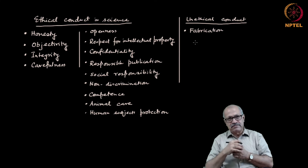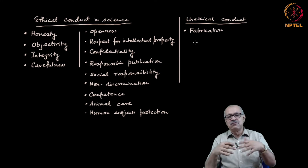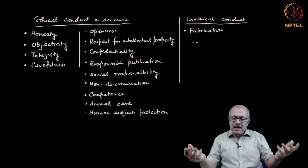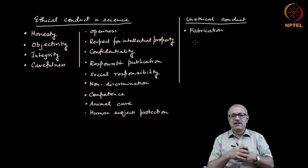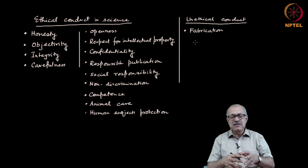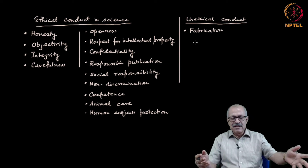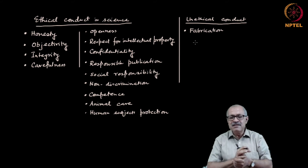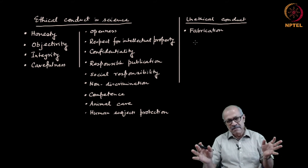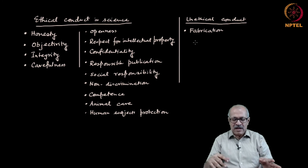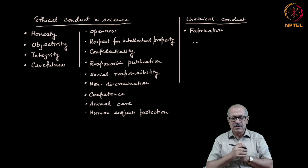Often people do that if they are not successful as a scientist yet want name, fame, and promotions. Then people fabricate data from experiments that they have not conducted and report results of that. Let me tell you clearly that these are always detected sooner or later, which leads to disgrace. Never try to earn name and fame by means of fabrication of data.